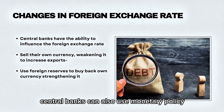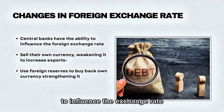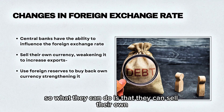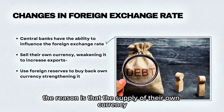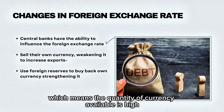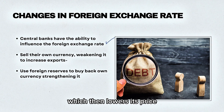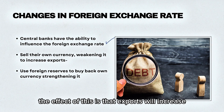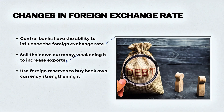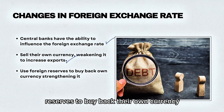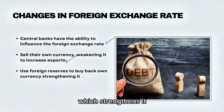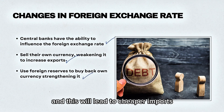Central banks can also use monetary policy to influence the exchange rate. They can sell their own currency, which weakens it — the supply of their currency shifts to the right, meaning the quantity available is high, which lowers its price, and the effect is that exports will increase. Alternatively, they can use their foreign currency reserves to buy back their own currency, which strengthens it, leading to cheaper imports.